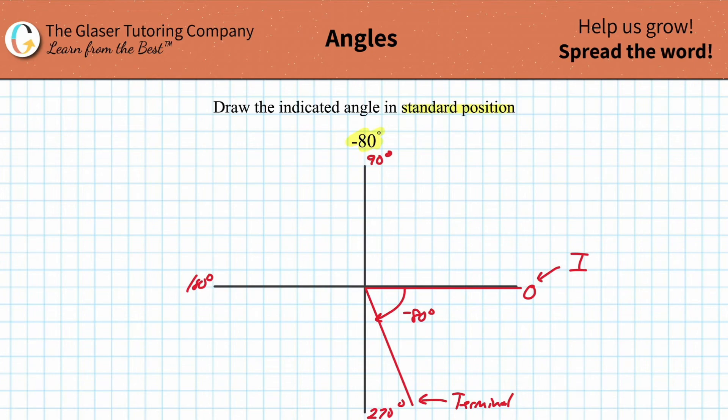You can also find the positive angle here. You would just take 360 and subtract 80 from it, which equals 280 degrees. That would be the positive angle.